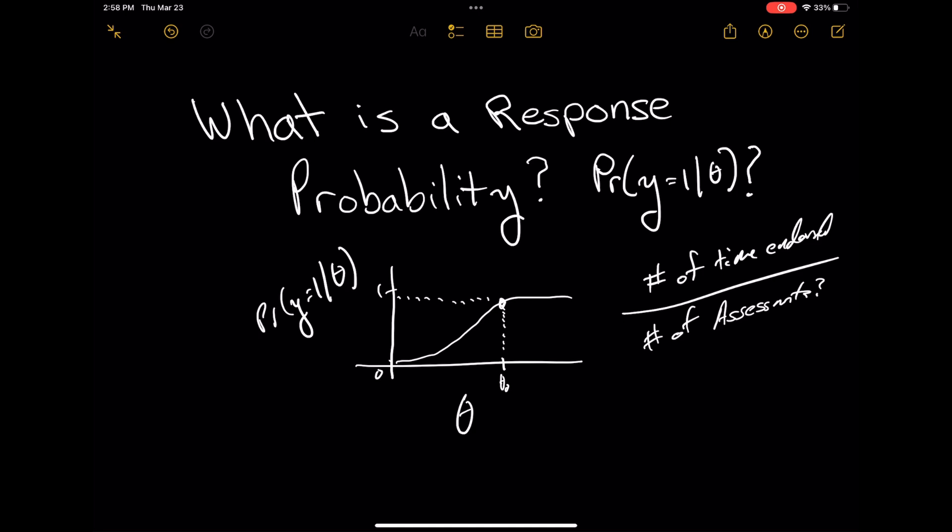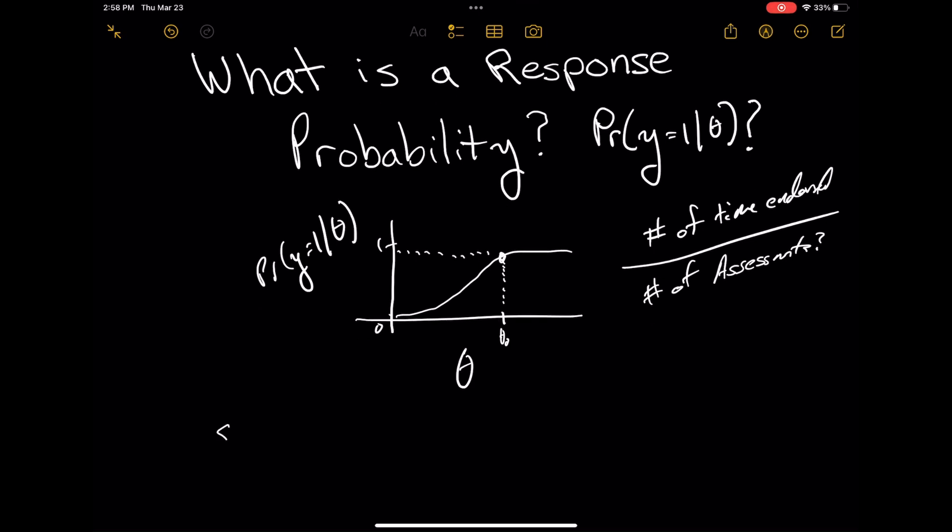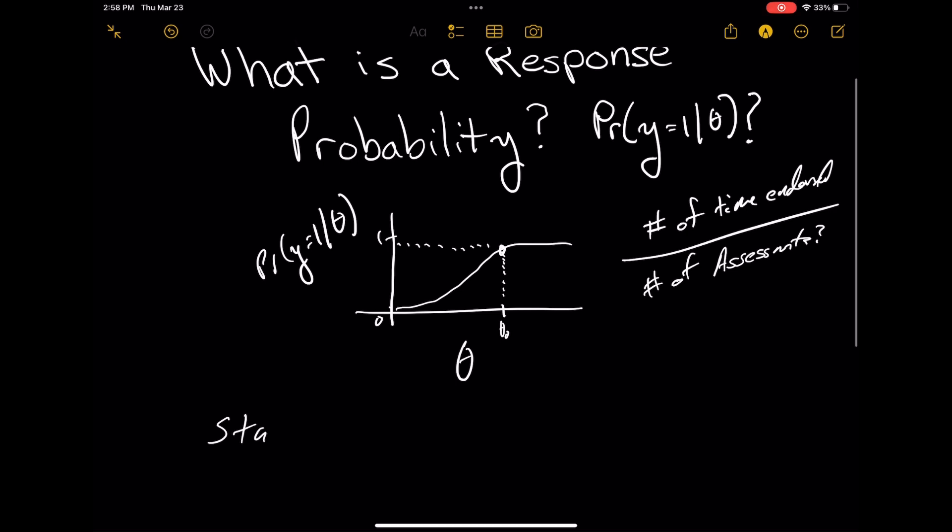That is one way of conceptualizing this probability. But I don't necessarily think this is the most useful and most statistically defensible way of doing it, because we cannot physically actually give people items repeatedly to obtain what that probability is. This is something known as the stochastic subject formulation.